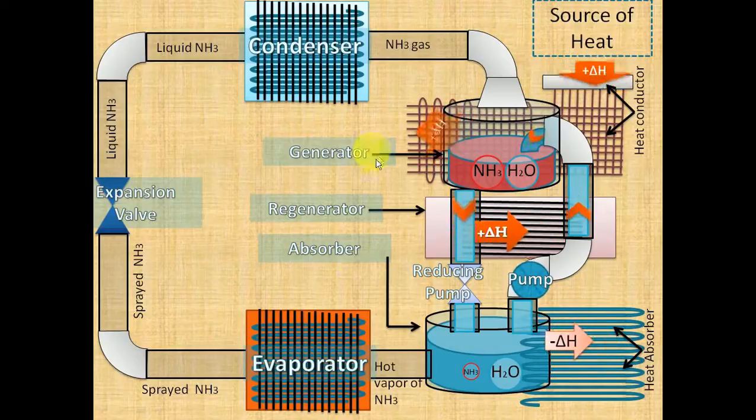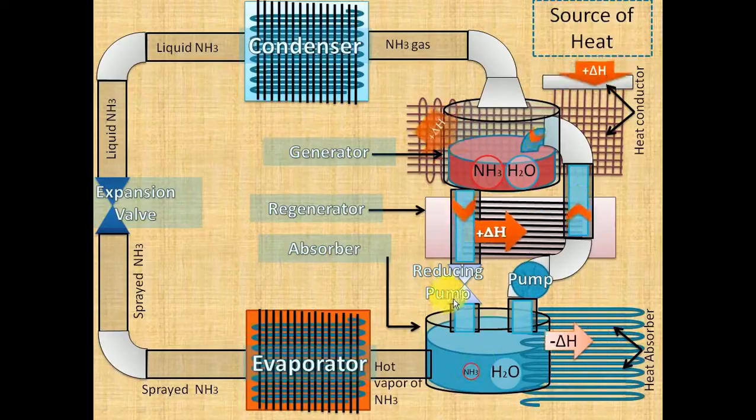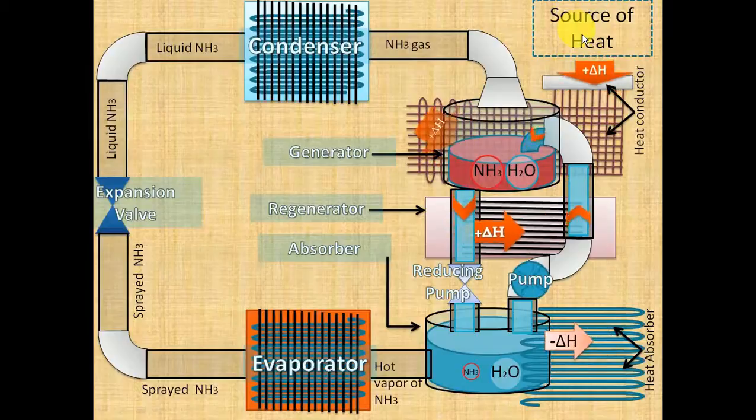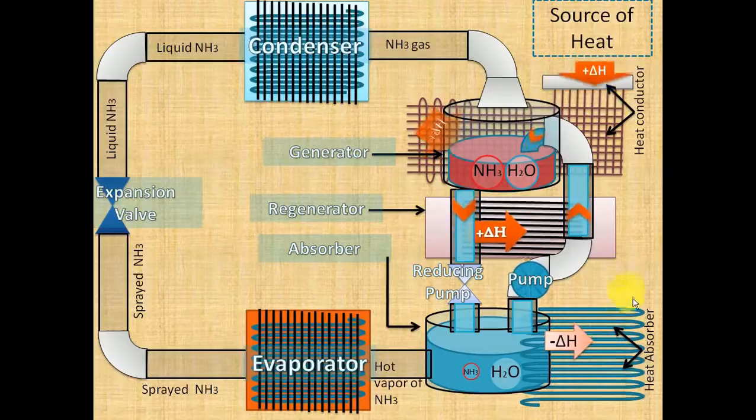Generator, regenerator, absorber, reducing pump, and pump. There are some external components. Let me specify them. Source of heat can be solar energy or heat produced from factories. Heat conductor, heat absorber. Here the refrigerant is the solution of ammonia and water.